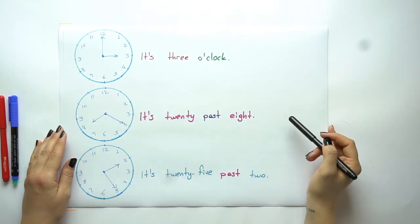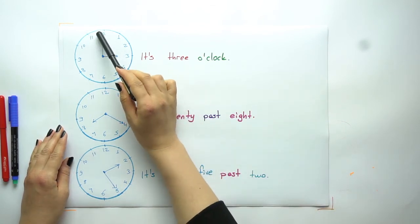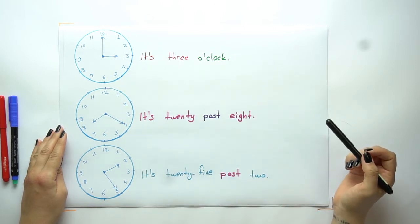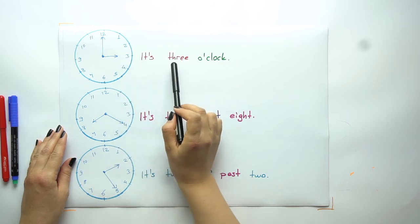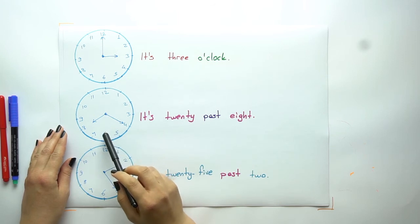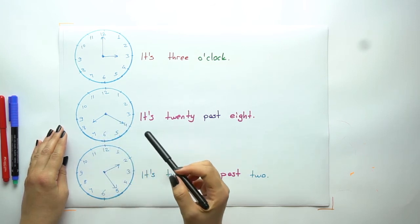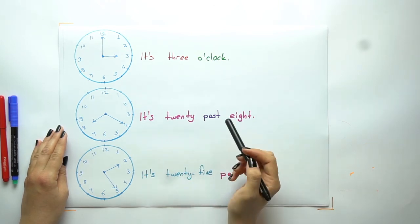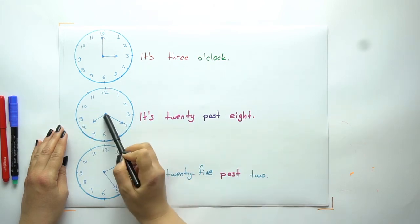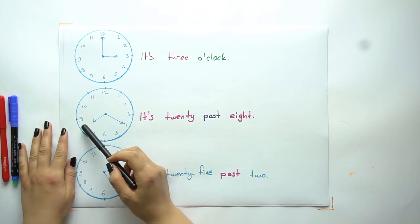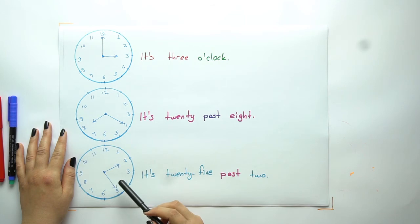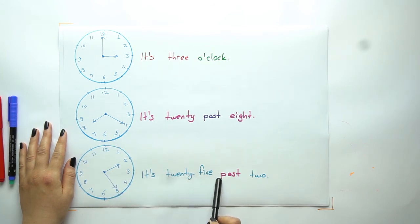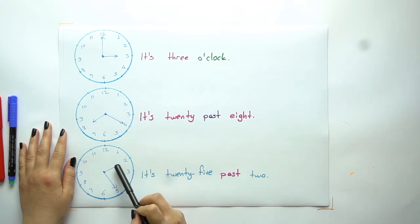Next one: what time is it in this example? The long hand is on 12, so it means o'clock. The small hand is on 3, so the time is 3 o'clock. Next example: the long hand is on 4, so when the long hand is on 4, it means 20 past. Small hand is on 8, so it's 20 past 8. Next one: it's 25 past 2. Look at the long hand — as you can see, it's on 5, so it means 25 past. Small hand is pointing to 2.